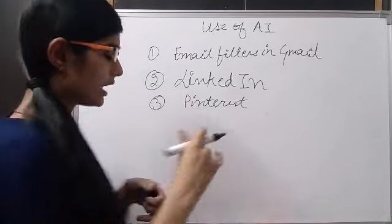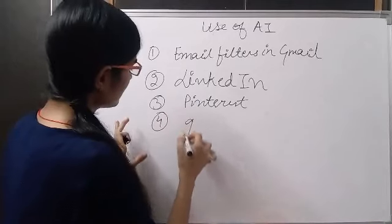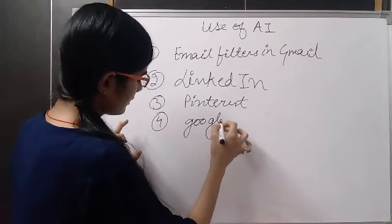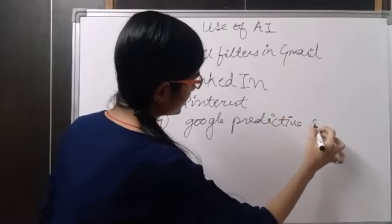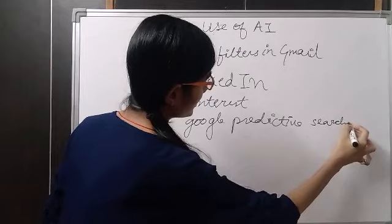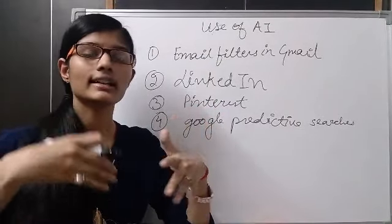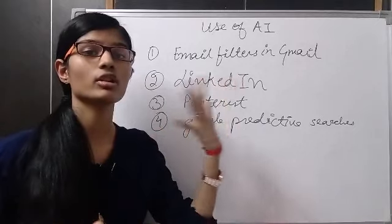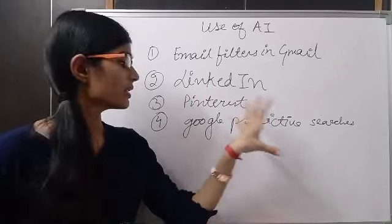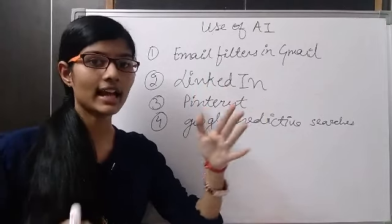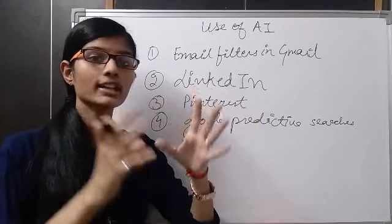Now our fourth use of AI is Google predictive searches. So you all on a daily basis search something on Google. When you search that thing, it stores there, and on the second day when you again search that thing, you write the first and second letter and the whole thing appears.